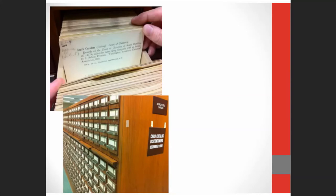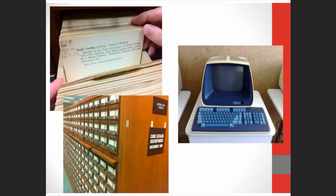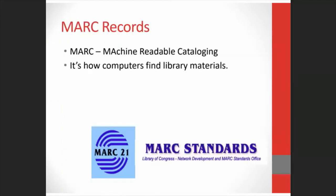Libraries used to use card catalog drawers to organize the items in their collection. Eventually, we figured out that we could use computers to do it faster, and it was at this time that MARC was invented. MARC stands for machine-readable cataloging. It was created by an American computer scientist named Henriette Avram, who was working with LC in the 1960s to develop a method to help librarians search all parts of the record quickly and at one time without needing to search multiple paper files.